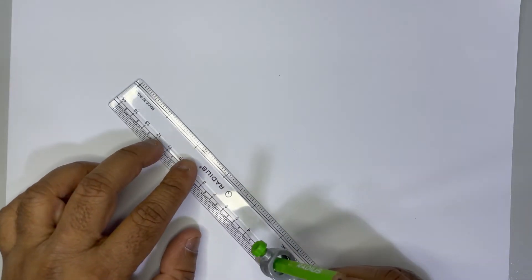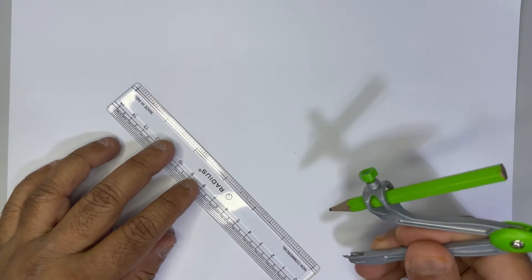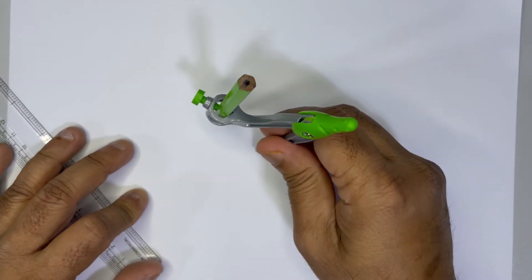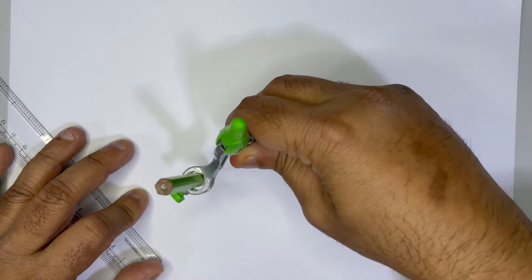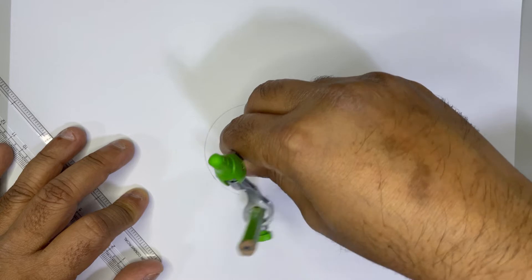Take a compass and on that measure around three centimeters. After measuring three centimeters, just draw a circle with three centimeters.